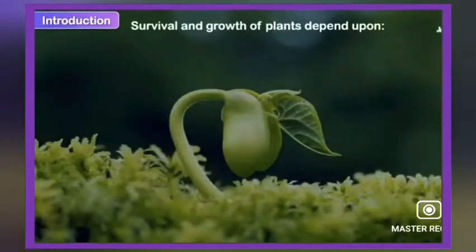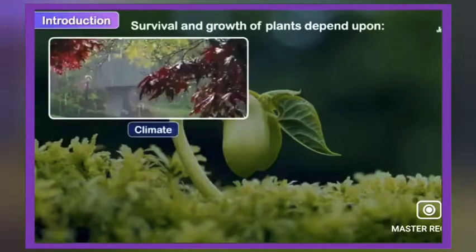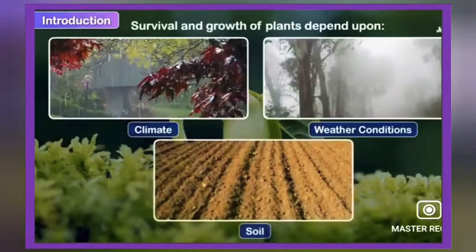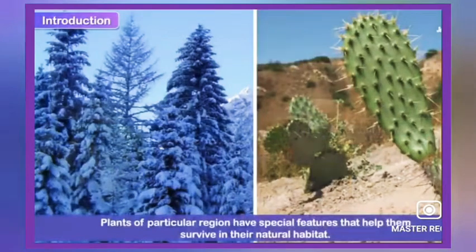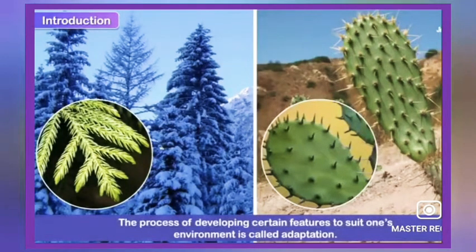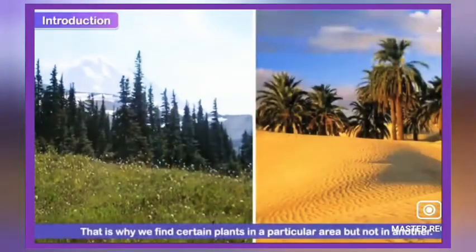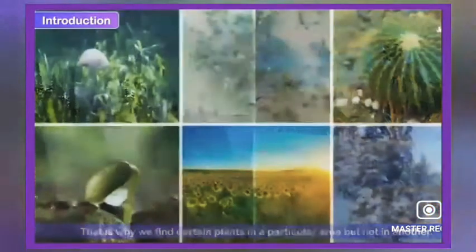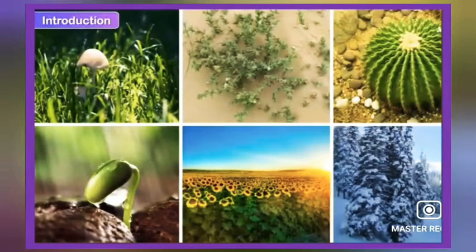The survival and growth of plants depend upon the climate, weather conditions and soil of the place. Plants of a particular region have special features that help them survive in their natural habitat. The process of developing certain features to suit one's environment is called adaptation. That is why we find certain plants in a particular area but not in another.